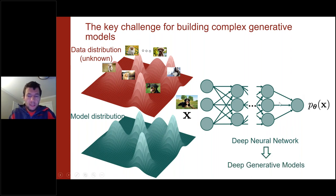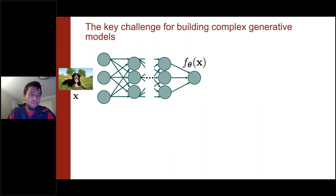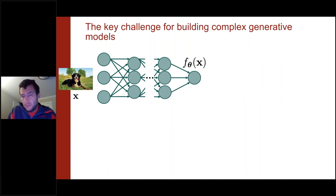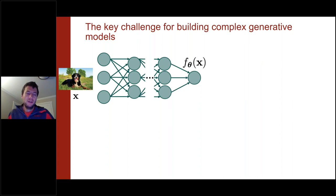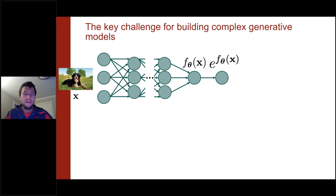These are called deep generative models because they leverage deep neural networks to represent the underlying function. However, it's not trivial to do this. You cannot just take an arbitrary deep neural network to model a probability distribution, because probabilities cannot be negative. We need to ensure all outputs are consistent with being a probability distribution — for example, we can enforce non-negativity by exponentiating the neural network's output.